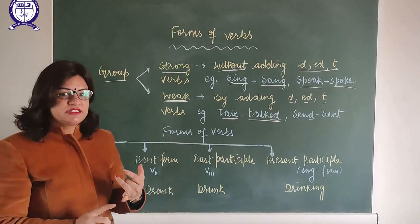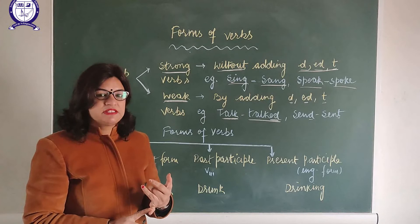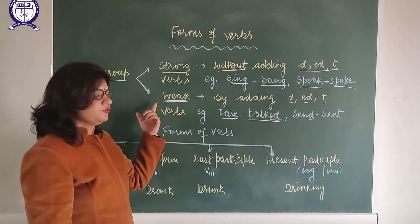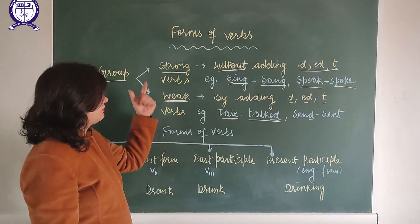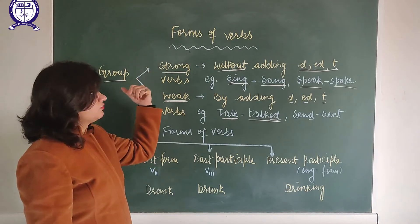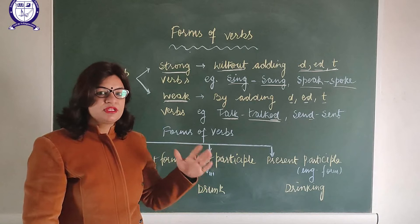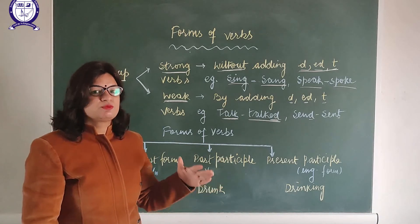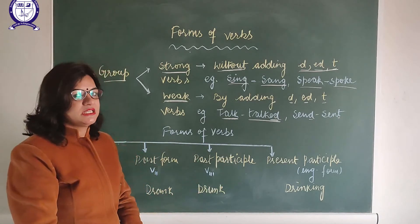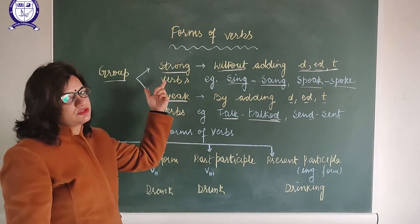For example, weak verbs: 'play' — play, played, played; 'cook' — cook, cooked, cooked. These are the weak verbs. In the similar way, strong verbs: 'go' — go, went, gone; 'come' — come, came, come. These are the verbs whose past participles are formed without adding D, ED, or T, and these are known as the strong verbs.